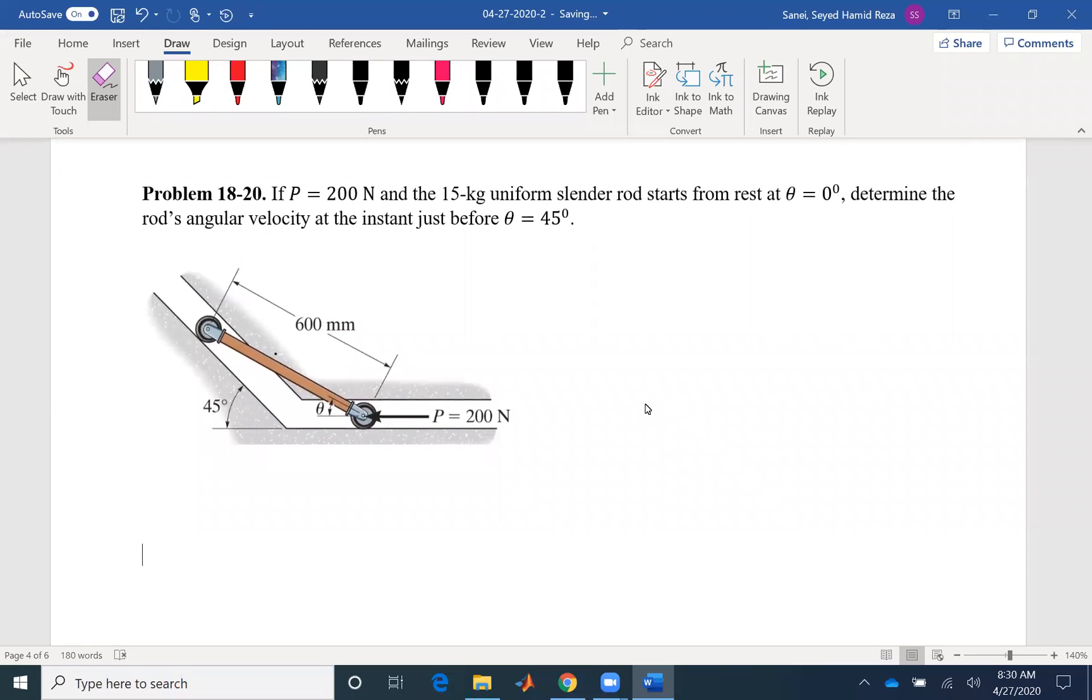Hello everyone. Today we are going to solve problem 20 of chapter 18. If the force 200 newton is being applied to our system and the 15 kilogram uniform rod starts from rest, determine the rod's angular velocity at the instant just before theta is 45.